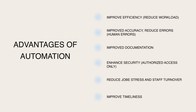Advantages of automation: number one, improve efficiency and reduce workload; number two, improve accuracy and reduce human errors; number three, improve documentation; number four, enhance security such as authorized access only; number five, reduce job stress and staff turnover; and number six, improve timeliness.